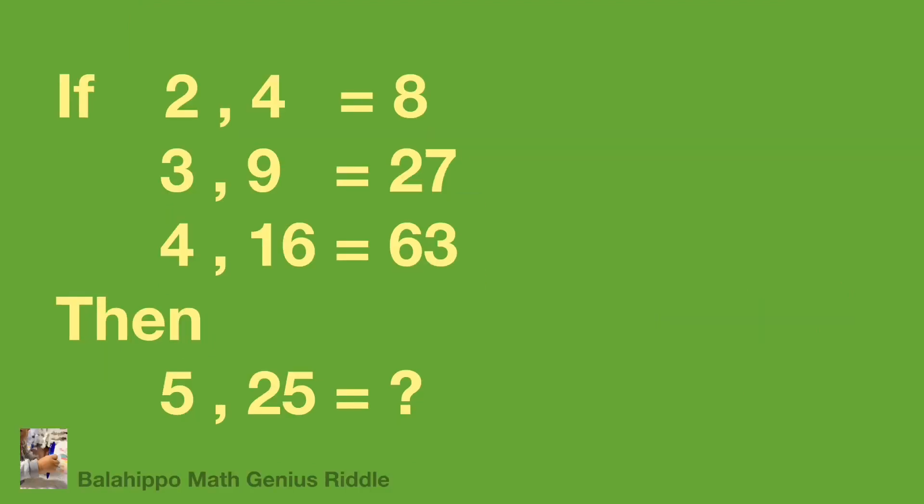Some people read the question and said it must be a typo. They find 2 times 4 equals 8, 3 times 9 equals 27, then 4 times 16 should be equal to 64.